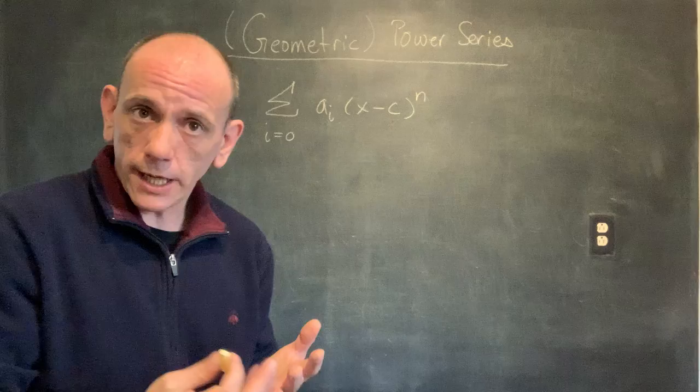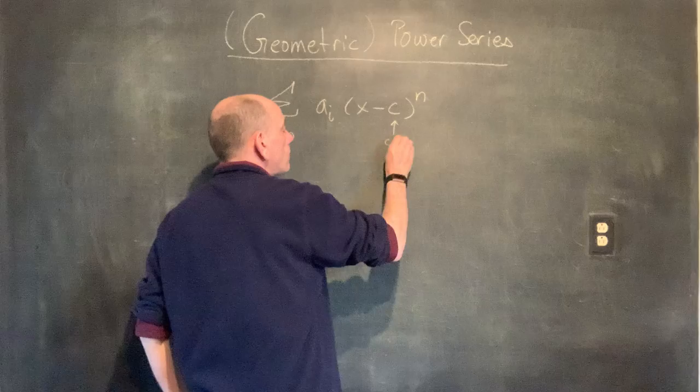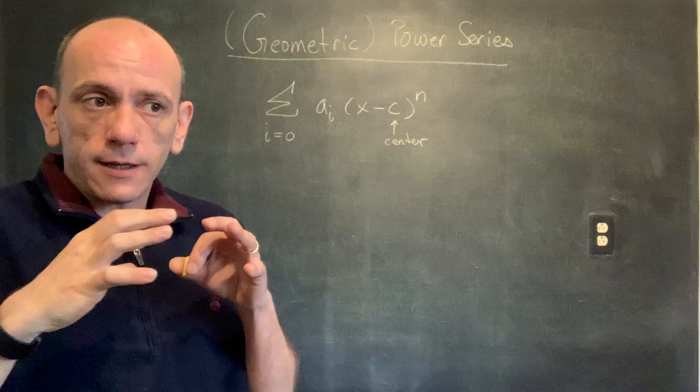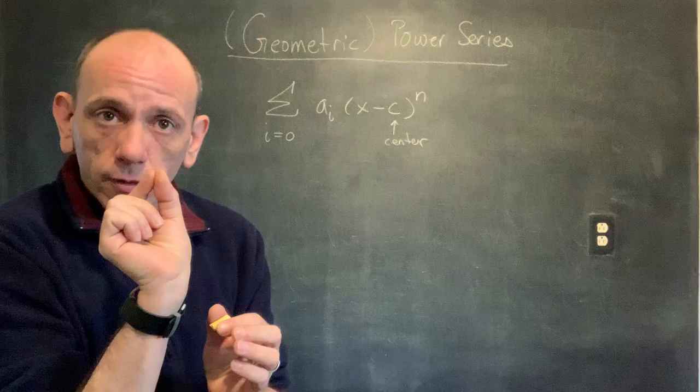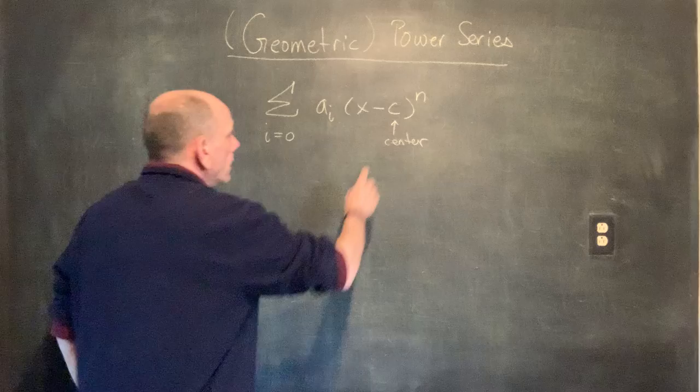In this expression, a_sub_i is a sequence — those are the coefficient terms out in front of the x. The 'minus c' — that's the center. We call that the center. We'll see later that this makes sense: we have a radius of convergence about this center, so it'll be equally balanced on either side of the center, and it always converges at the center.